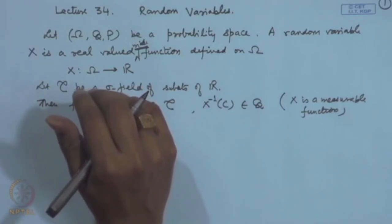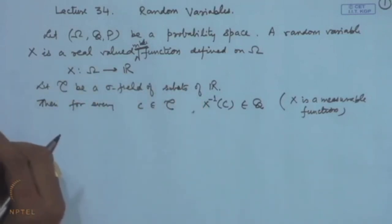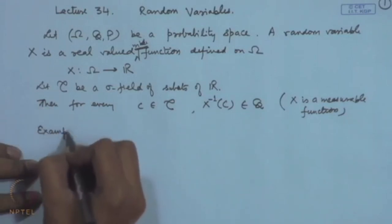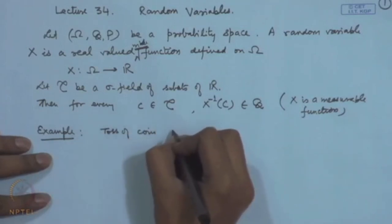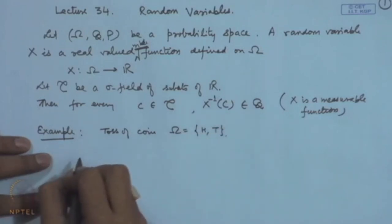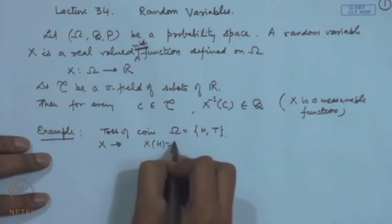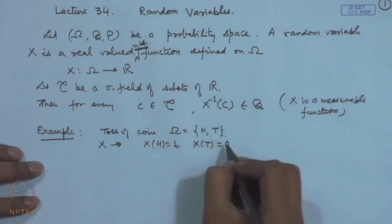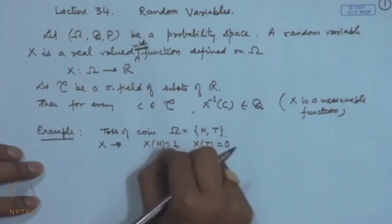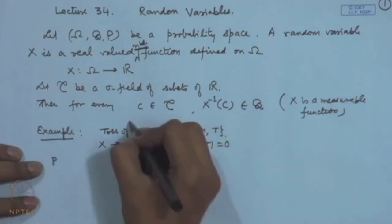Let us look at the types of random variables. Consider the toss of a coin: if we are interested to know whether the head has occurred or not, we can define a random variable x such that x(H) = 1 and x(T) = 0. This means if head has occurred the indicator is 1, otherwise 0. From the value of x, you can determine whether head occurred or not. Correspondingly, if the coin is fair, the probability that x = 1 is the probability of occurrence of head, which is 1/2.